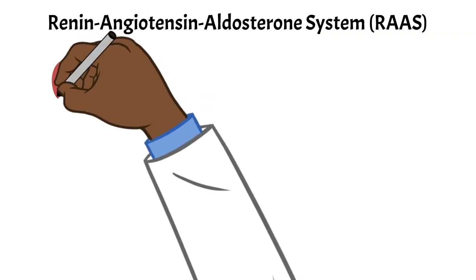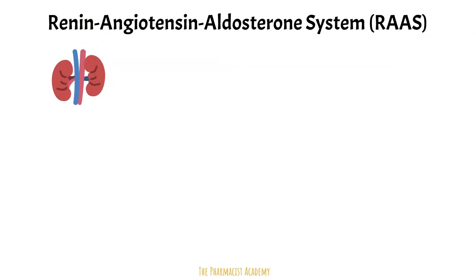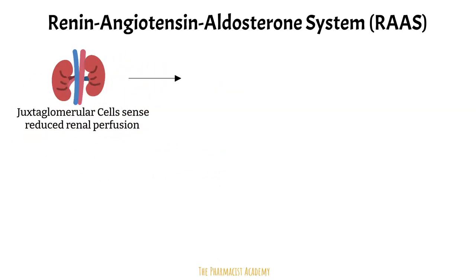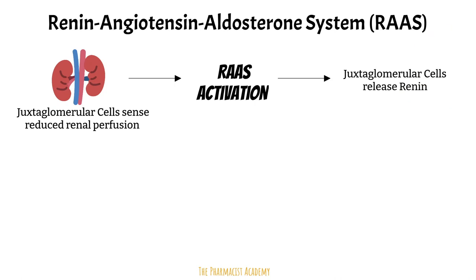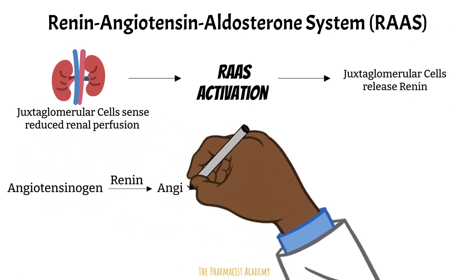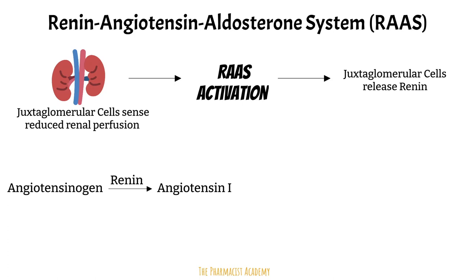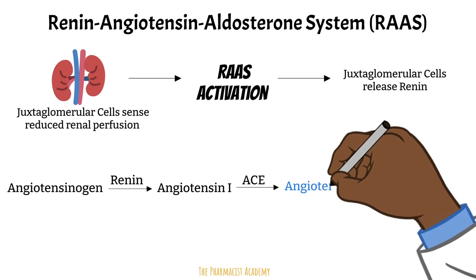It starts with the juxtaglomerular cells in the kidneys. They hang out around the afferent arterioles — vessels that bring blood into the glomerulus of the kidney for it to be filtered. Once the juxtaglomerular cells detect reduced renal perfusion, the RAS system gets activated. This begins when they release renin. Angiotensinogen in the liver gets cleaved by renin to form angiotensin 1, and then ACE, the enzyme, helps convert angiotensin 1 to angiotensin 2.